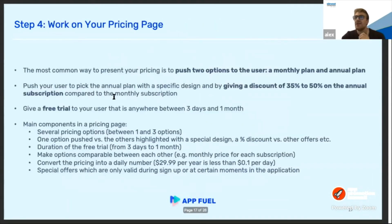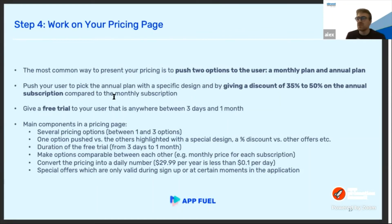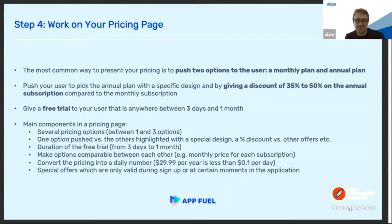Now let's talk about the last step of the framework: the pricing page. A good starting point is to offer two options — a monthly plan and an annual plan — then push users toward the annual plan by giving a discount of between 35% and 50%. On top of this, add a free trial period, which is anywhere between three days and one month — one month if you're Apple promoting a new service like Apple Arcade or Apple Music, but typically shorter for most apps.